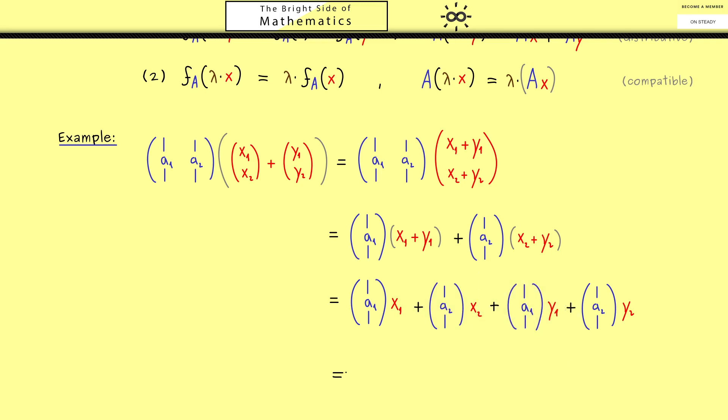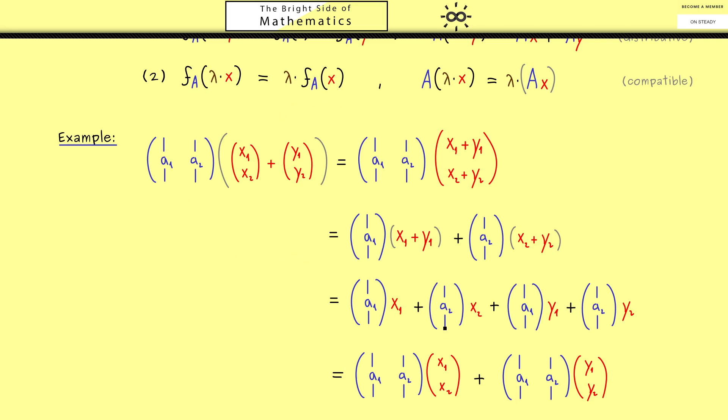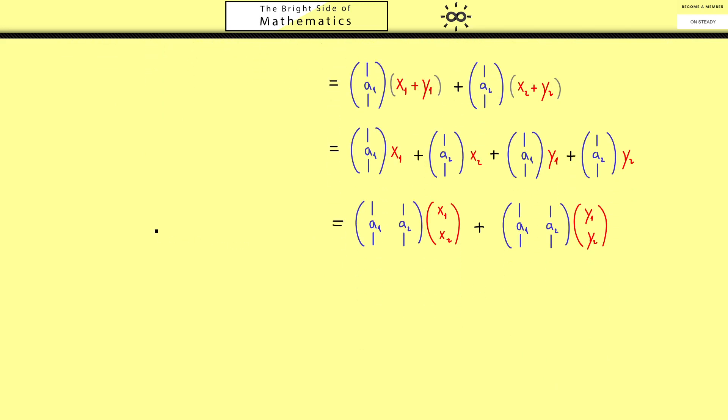Namely, it's again a matrix vector multiplication. But now, the first part here is the matrix A applied to our vector x. And of course, the second part here is our matrix A applied to our vector y. And then you see, this is our result we wanted. Or in other words, with this calculation here, you could also prove the linearity of the map f_A. So in the end, you should see, it's not so complicated, it's a very natural property.